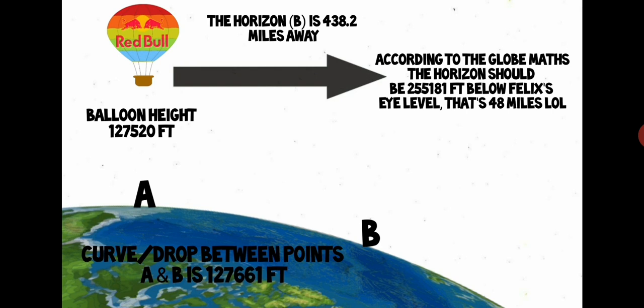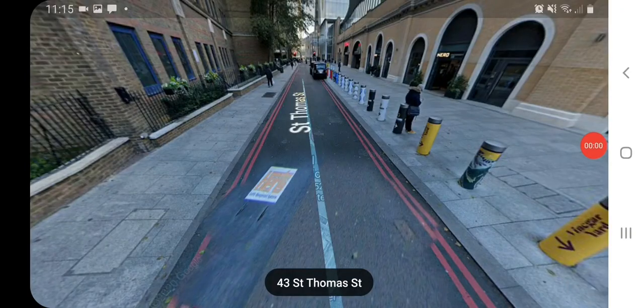438.2 miles away according to the globe. But the bizarre thing is here, according to the globe, when we add the balloon height up plus the amount of curvature between the two points of reference, it essentially is doubled. The horizon that Felix is seeing from his balloon that is at camera height, according to the globe math, that horizon should be 255,181 feet below Felix's eye level or the camera level. That's 48 miles below camera level. Think about that.